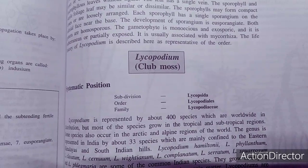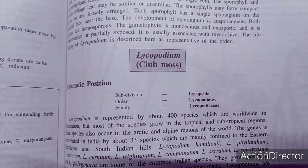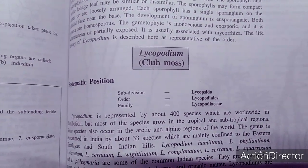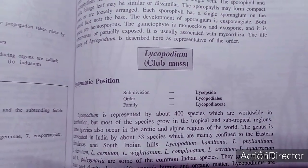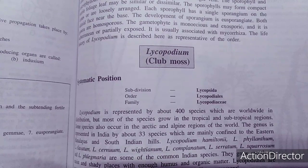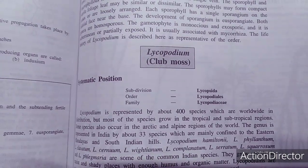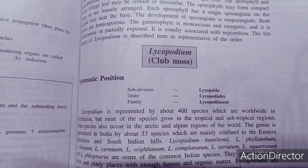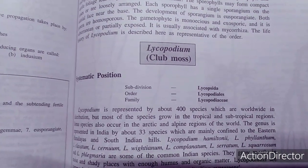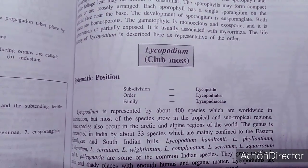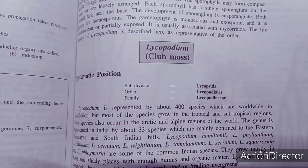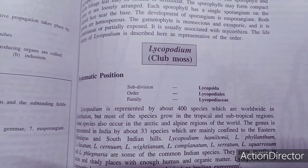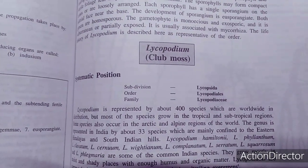The gametophyte is subterranean. This belongs to the family Lycopodiaceae. Now we are identifying how we can recognize Lycopodium — these are microphyllous, and this is a club moss.